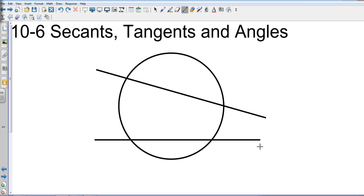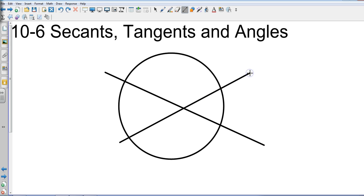So let's just make some intersecting lines. I could label these, let's go A, B, C, D. Okay, so there are a couple of secants.